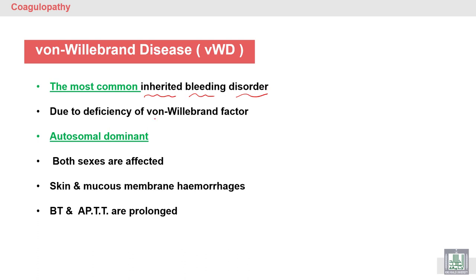Von Willebrand disease is caused by deficiency of Von Willebrand factor, leading to Von Willebrand disease. Type 1 Von Willebrand factor deficiency is autosomal dominant, so both sexes are affected. In comparison, hemophilia is also one of the most common inherited bleeding disorders, but it is sex-linked, affecting males, while females are carriers.